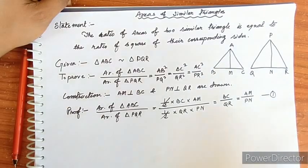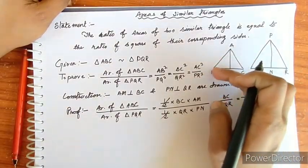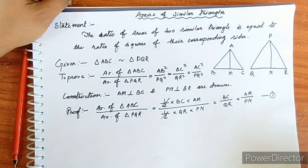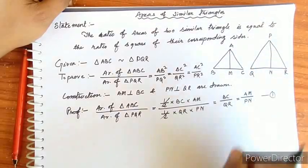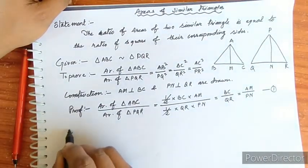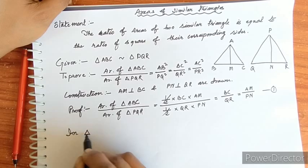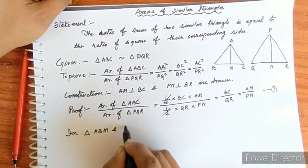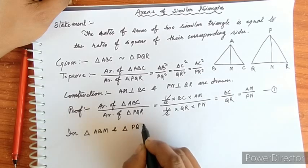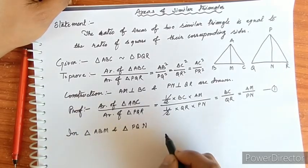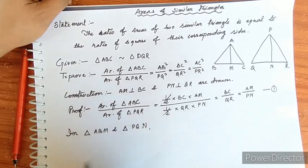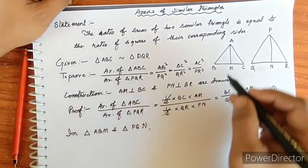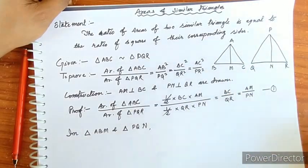Consider triangles ABM and PQN. Triangle ABM is similar to triangle PQN.